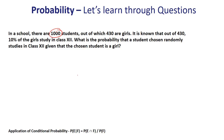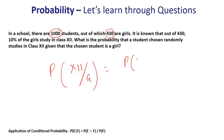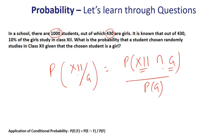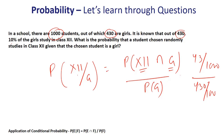In a school there are 1000 students, out of which 430 are girls. It is known that out of 430, 10% of the girls study in class 12. What is the probability that a student chosen randomly studies in class 12 given that the student is a girl? P(class 12 | girl) = P(class 12 ∩ girl) / P(girl). Girls in class 12 is 10% of 430, which is 43 out of 1000. Probability of girl is 430/1000. So the conditional probability is 43/430 = 1/10.